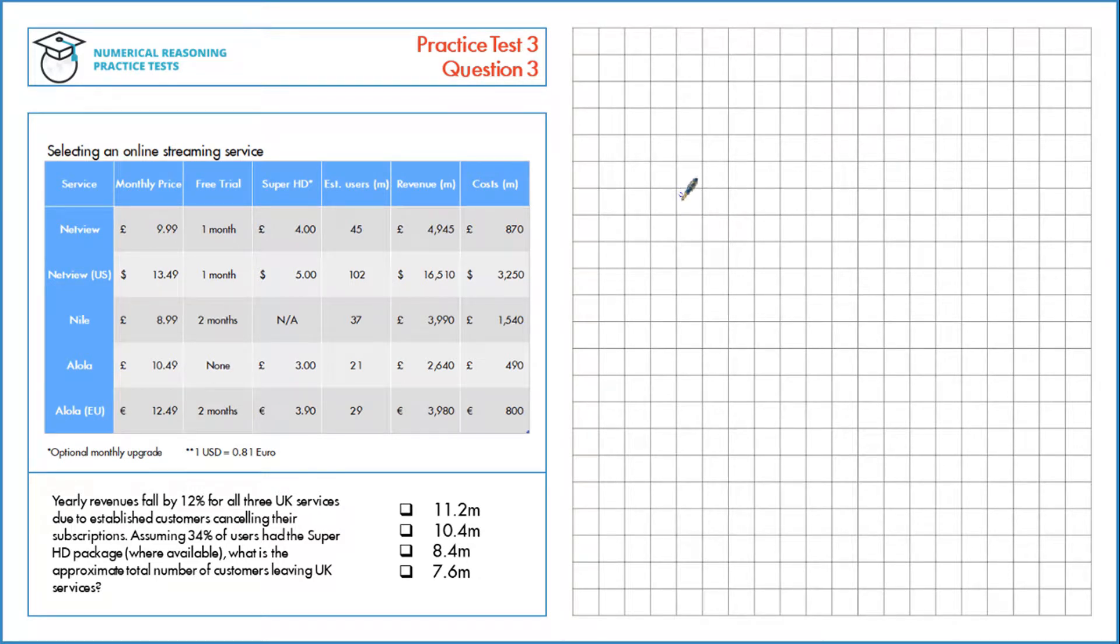Question 3. Yearly revenues fall by 12% for all three UK services due to established customers cancelling their subscriptions. Assuming 34% of the users had the SuperHD package, what is the approximate total number of customers leaving UK services?